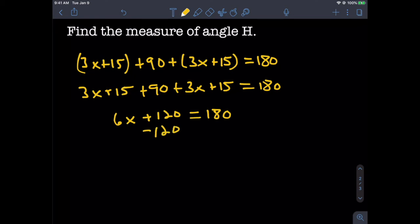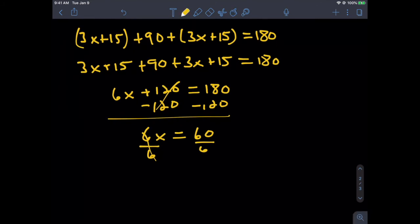Solving for x, we subtract 120 from both sides, giving us 6x = 60. Then we divide everything by 6, which gives us an answer of x = 10.